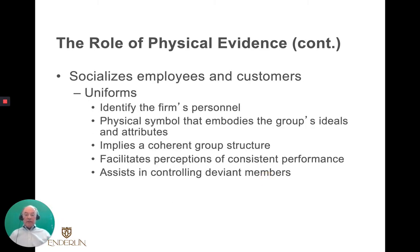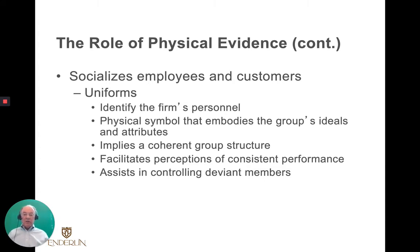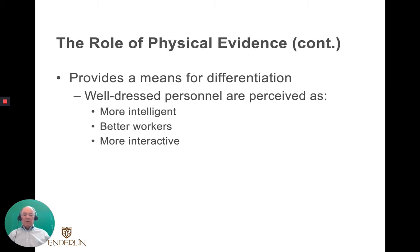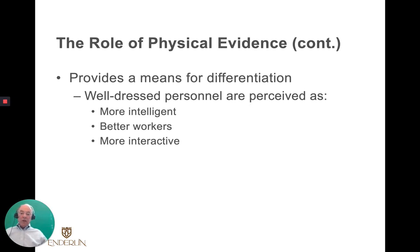It socializes employees and customers. The uniform tells you what to expect. Southwest Airlines did an informal uniform, which influences your expectation of them. Well-dressed personnel could be considered more intelligent, better workers, more interactive — it differentiates you and shows who you are and what you're supposed to do. In one of the Portman-designed hotels, the uniforms were gray and the background was gray, and they couldn't even find the servers in the restaurant. So they had to change those colors — in those days, Westin was running those hotels.